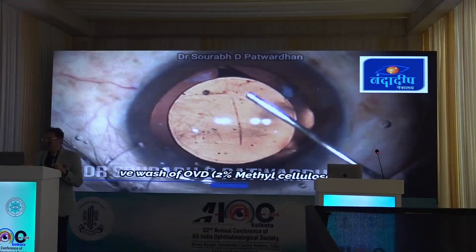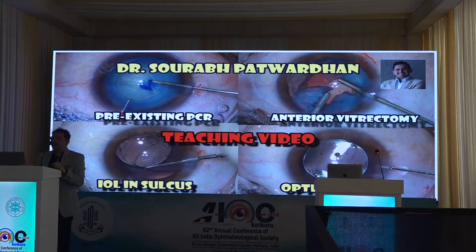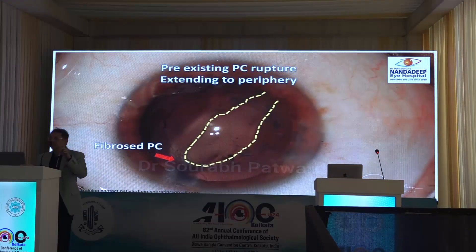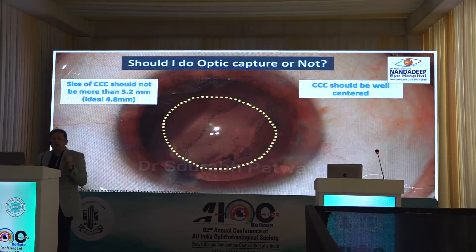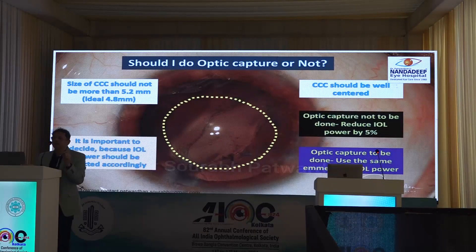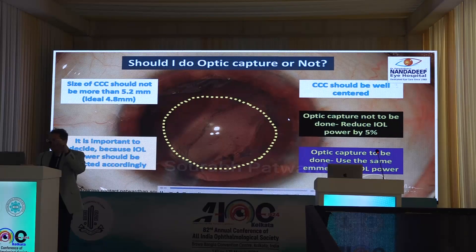Part two is placing the IOL in the sulcus when the first three conditions are not met and there is a large peripheral rupture. Pre-plan whether to place it with or without optic capture, because we still want the best refractive outcome. For optic capture, the CCC should not exceed 5.2mm — ideally 4.8mm. If not doing optic capture, reduce IOL power by 5%; if doing optic capture, keep the same emmetropic power.